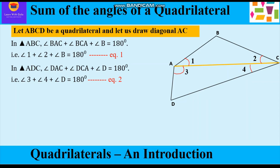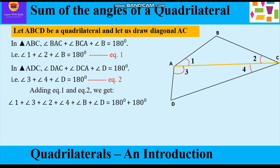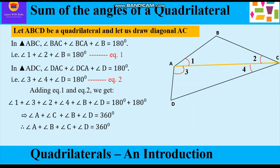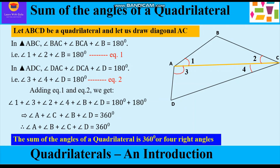Adding equations 1 and 2: (angle 1 + angle 3) + (angle 2 + angle 4) + angle B + angle D = 360°. Now angle 1 + angle 3 = angle A, and angle 2 + angle 4 = angle C. So angle A + angle B + angle C + angle D = 360°. Therefore, the sum of all the angles of a quadrilateral is 360° or 4 right angles.